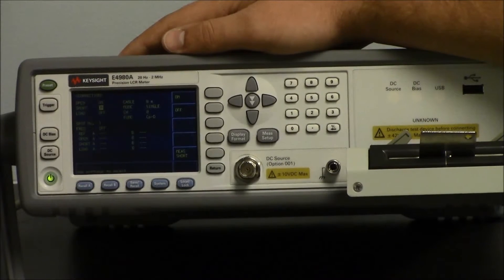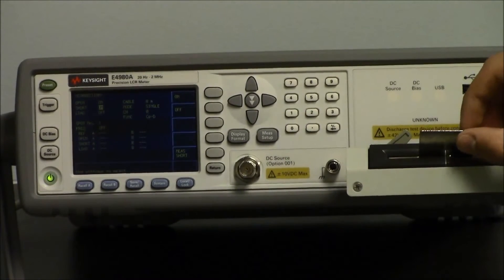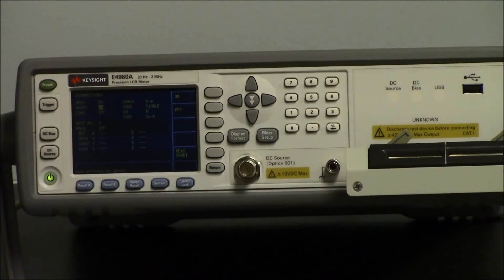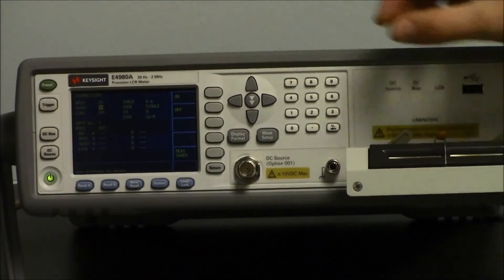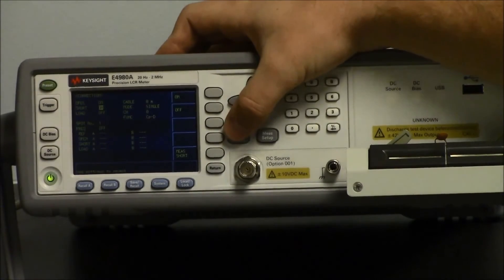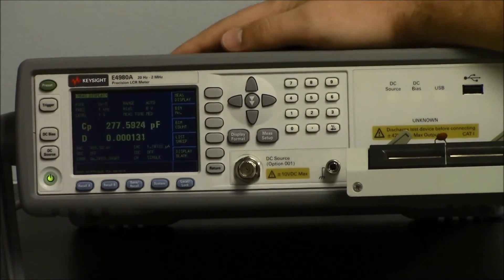After the short correction has been completed, we are ready to start taking measurements of our devices. In this case, we have a capacitor. Put your capacitor in, hit display format to go back to the display, and there's our measurement.